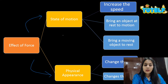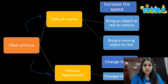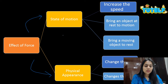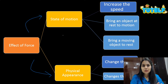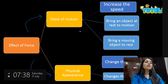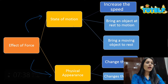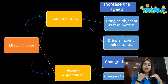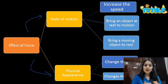What do we mean by state of motion? When the position of an object does not change with respect to time, it is known as being at rest. But if the position of an object keeps on changing with the change in time with respect to a reference point, then the object is said to be in motion. This change of state of motion could be an increase in speed, bringing an object from motion to rest, or from rest into motion.